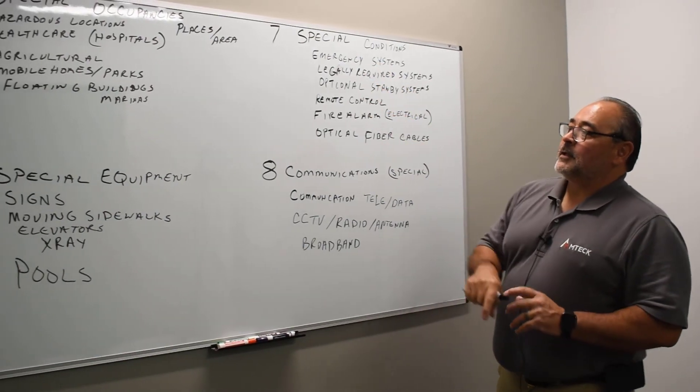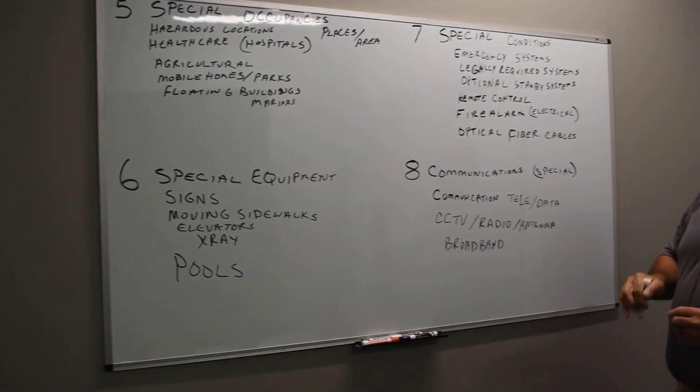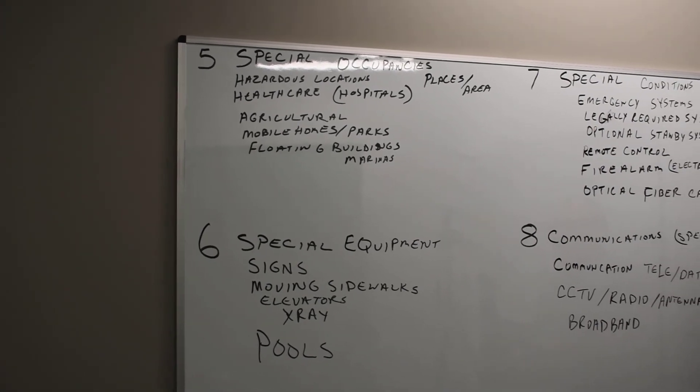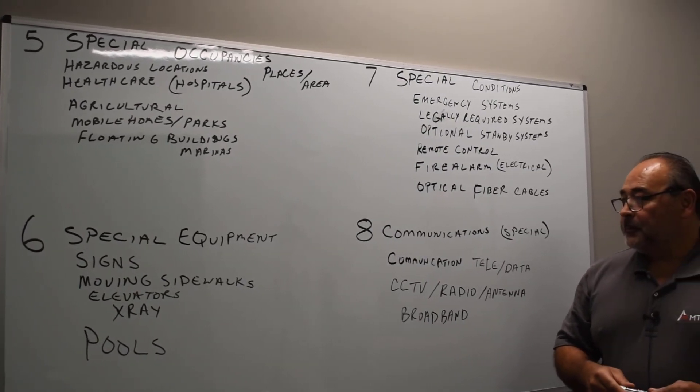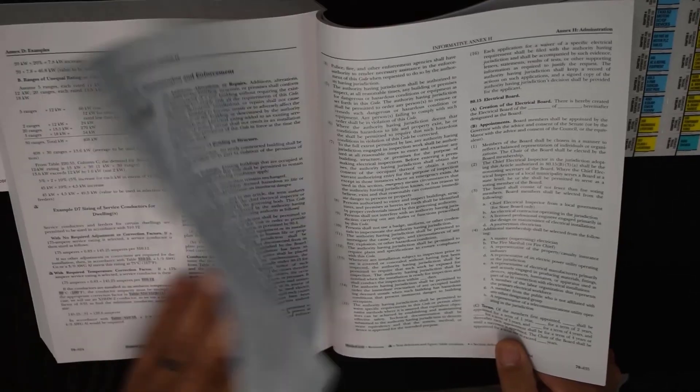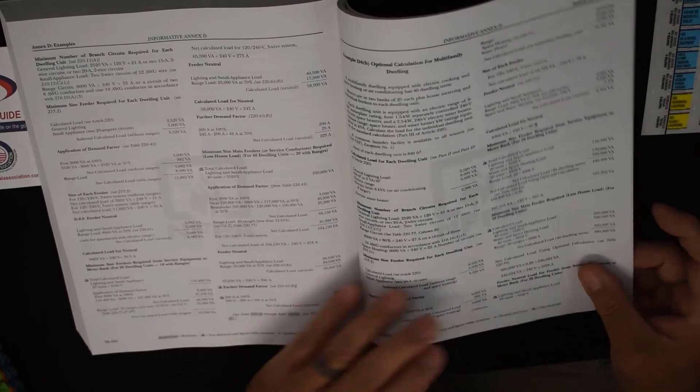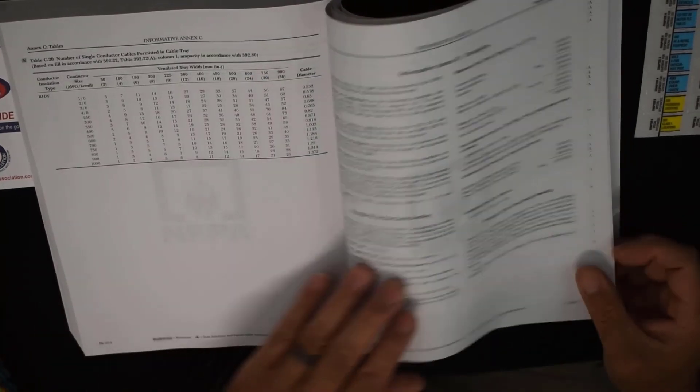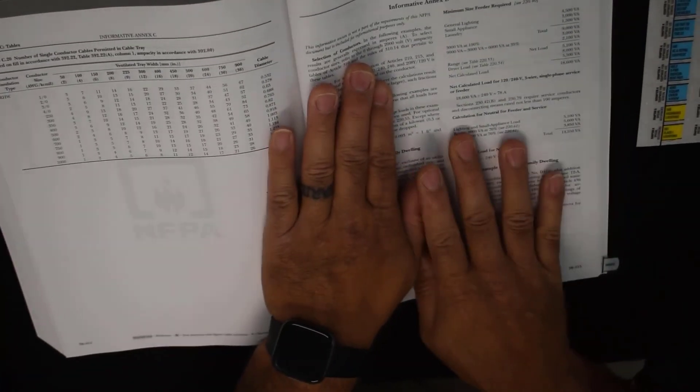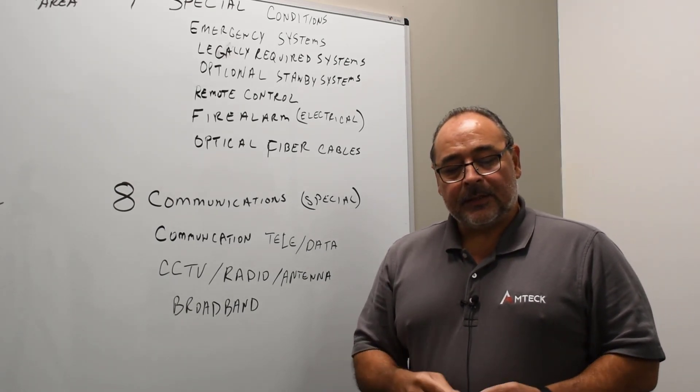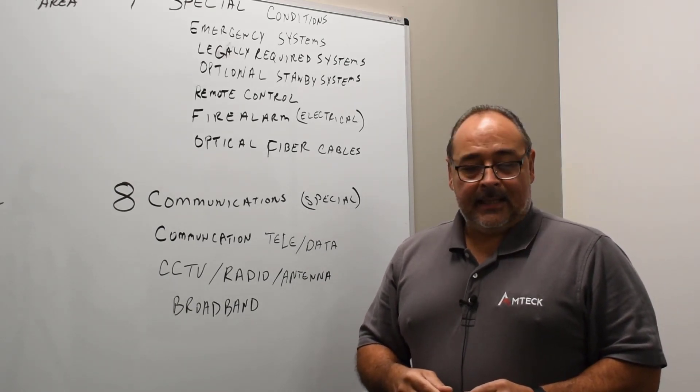This is kind of the layout of the last four chapters of the National Electric Code. We'll talk about chapter nine just briefly. Chapter nine is the tables. They're going to help you to figure some things out. The annexes in the back, it's more informational to give you kind of like a background on some of the pieces of the National Electric Code. And that's just information that comes from other sources. It's stuck in the National Electric Code for your aid in designing.